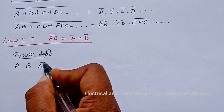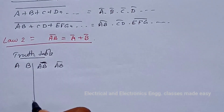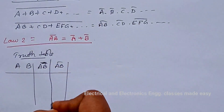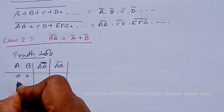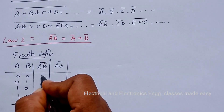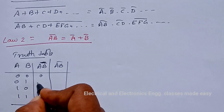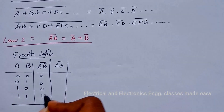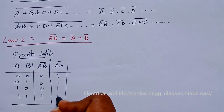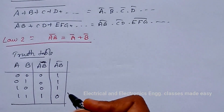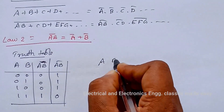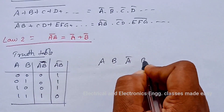For inputs A and B: 0,0; 0,1; 1,0; 1,1. AB is: 0, 0, 0, 1. Now AB whole bar, that is the complement of AB, is: 1, 1, 1, 0. Now let us check A bar plus B bar.